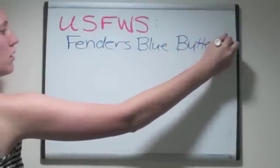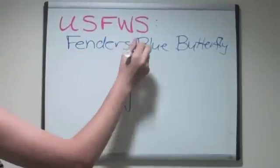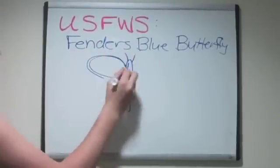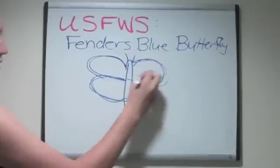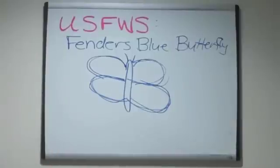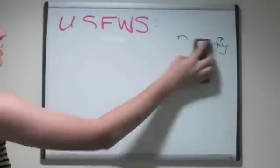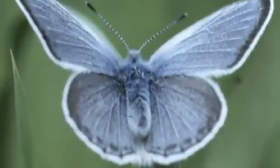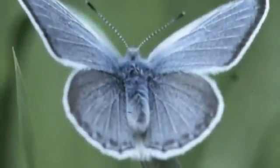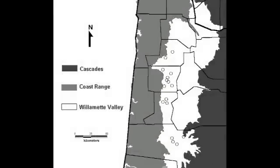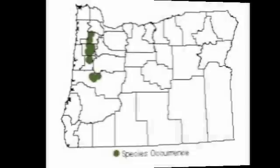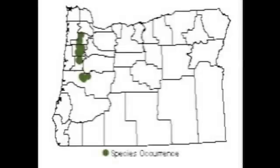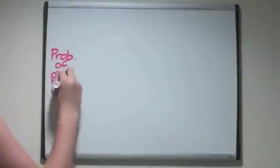A PVA was recently conducted for the endangered Fender's Blue Butterfly, with the goal of providing additional information to the United States Fish and Wildlife Service, which was developing a recovery plan for the species. The Fender's Blue is located mainly in the Willamette Valley of Oregon State. The study concluded that the Fender's Blue Butterfly was at even more of a risk than previously thought.